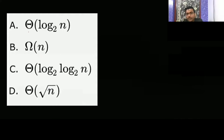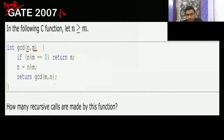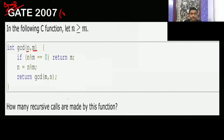They have given the options: theta log n base 2, omega n, log log. You try first, then I will give the answer. In worst case, try to find what is going to be the number of recursive calls. They are not asking you the time complexity, only how many recursive calls — how many times the GCD function is going to get called.